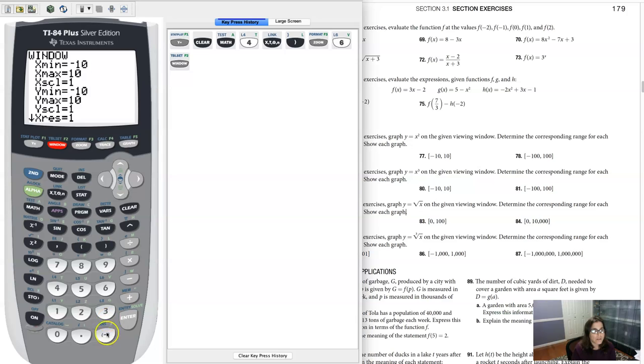So let me go back to my window and change this to negative 0.001 and then positive 0.001. And let me hit graph. I don't want to hit zoom 6. If I hit zoom 6, it's going to reset the x min and max back to negative 10 to 10.